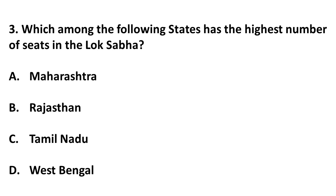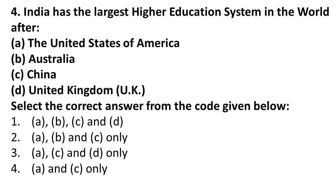The next question is: which among the following states has the highest number of seats in the Lok Sabha? Maharashtra has 48 seats, Rajasthan has 25 seats, Tamil Nadu has 39 seats, and West Bengal has 42 seats. Among the options, Maharashtra has the maximum seats, that is 48. Note that the highest number of MP seats overall in India is Uttar Pradesh with 80+. The correct answer is Maharashtra with 48 seats.